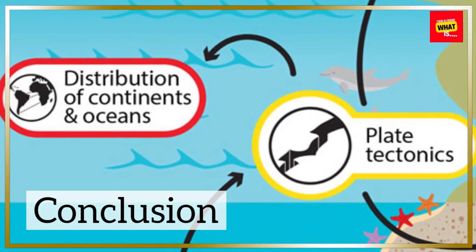Conclusion. The Earth's crust plays a vital role in plate tectonics by providing the surface upon which tectonic plates interact and move. The processes occurring at plate boundaries lead to the formation of geological features, influence seismic and volcanic activity, and impact climate and ecosystems.